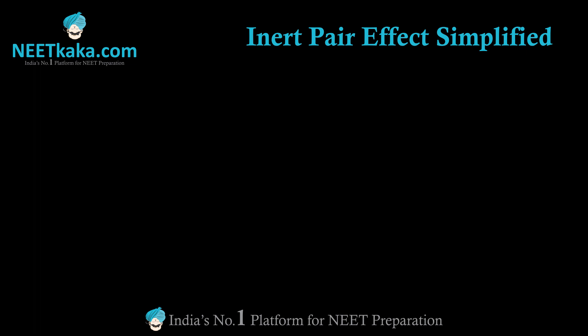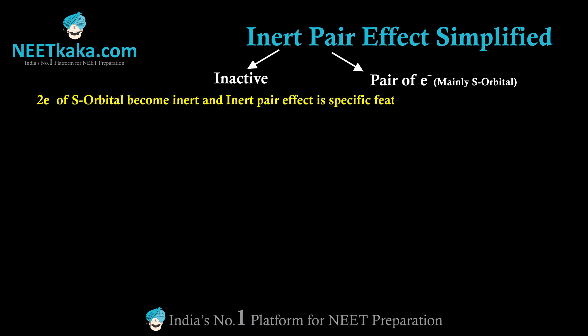In this video we will try to simplify the inert pair effect. Inert means inactive, and pair refers to the pair of electrons mainly in the s orbital. So two electrons of the s orbital become inert.